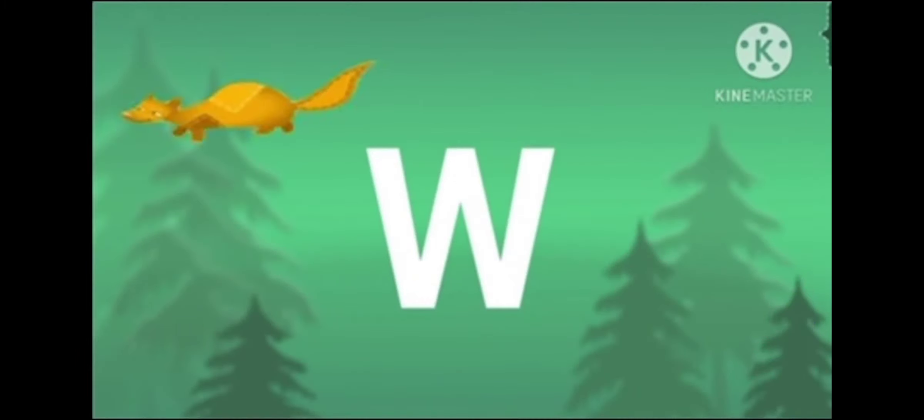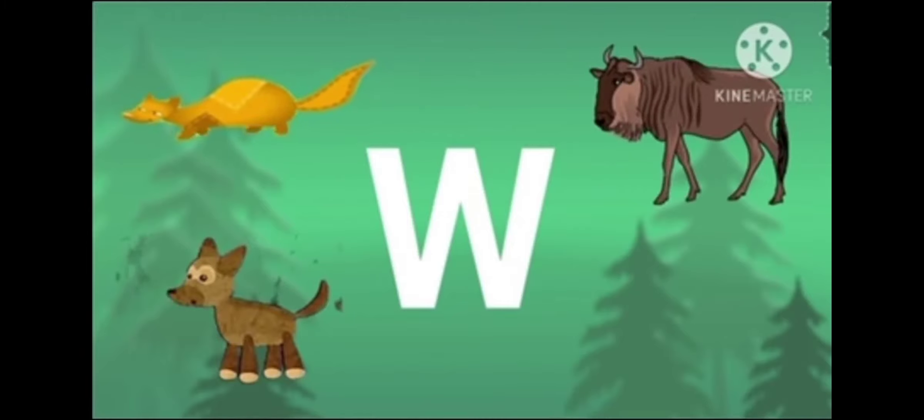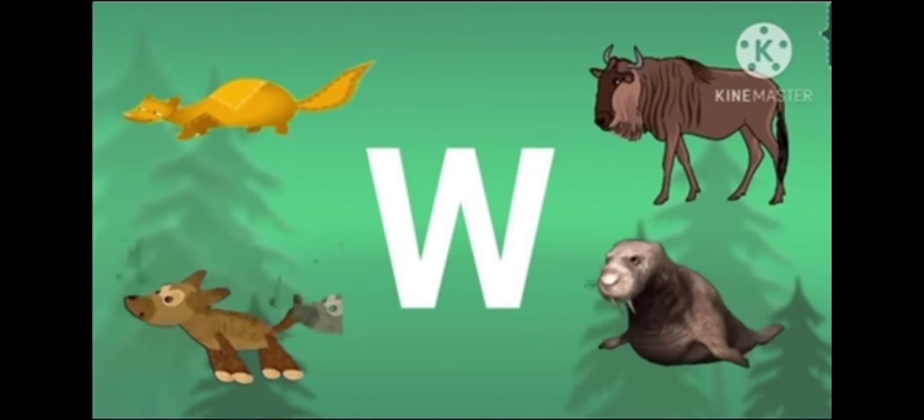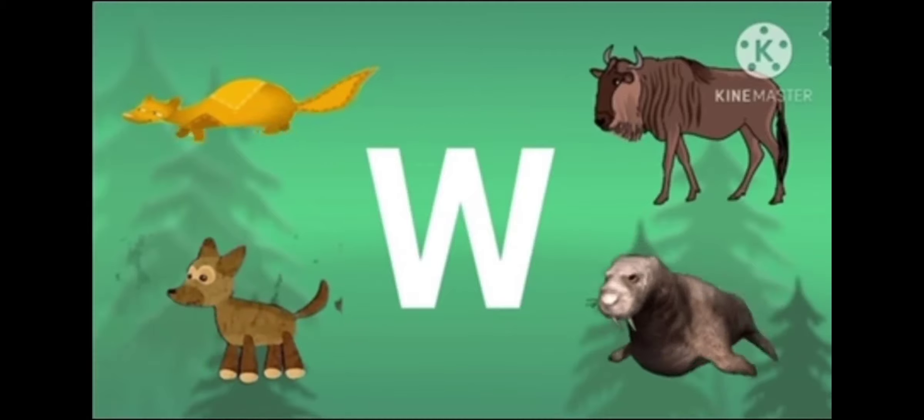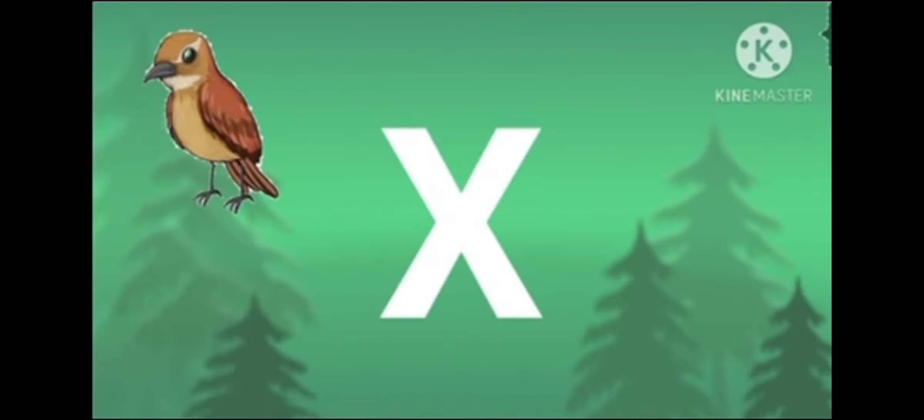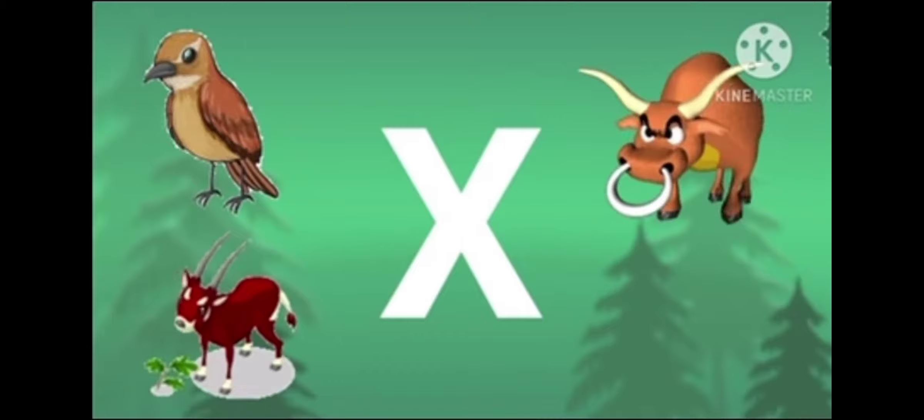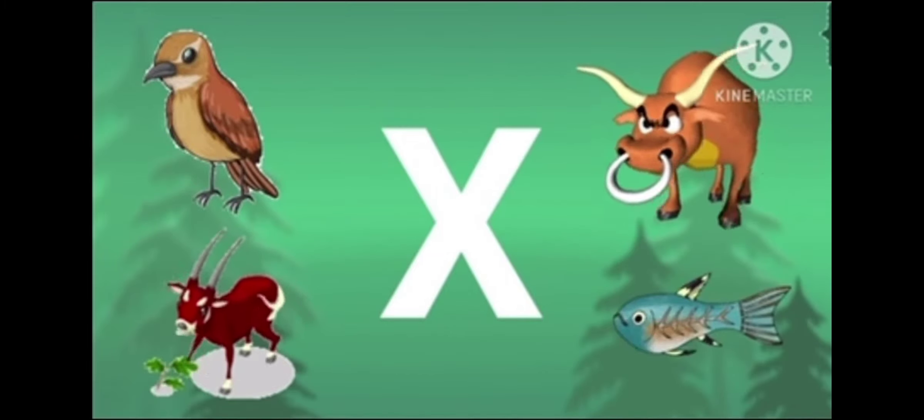W is for weasel, wolf and wildebeest. W is for walrus, resting on the beach. X is in xenops, oryx and ox. X is for x-ray fish, swimming in the lake.